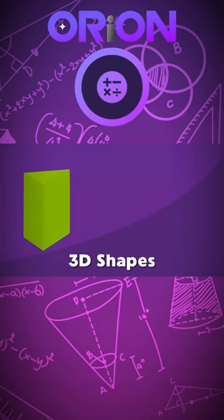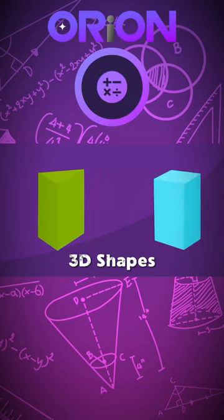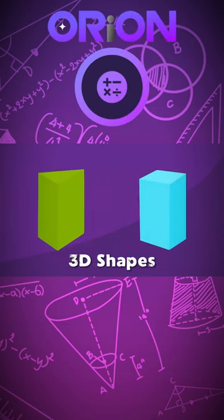These are 3D shapes. Let's learn about prisms, a type of polyhedra.